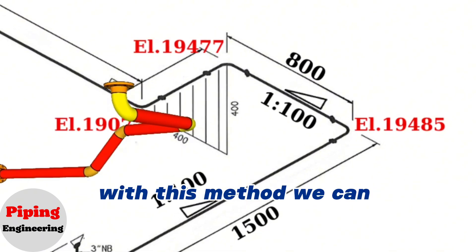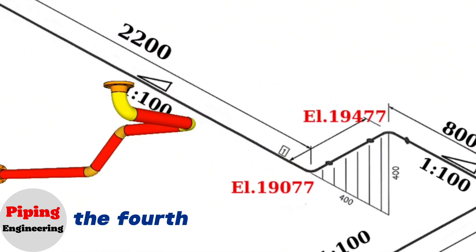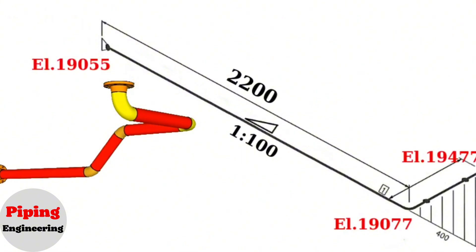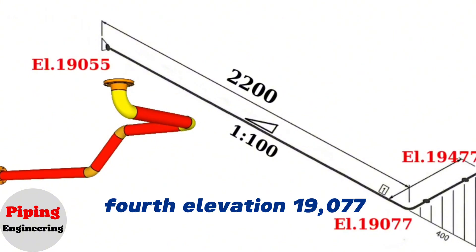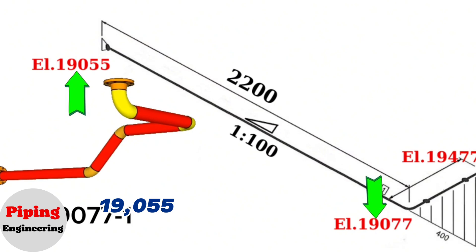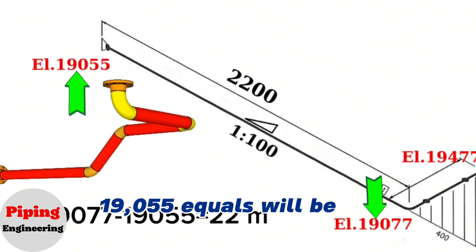With this method we can calculate the difference of the levels in the fourth and fifth rotations. Fourth elevation 19,077 mm minus fifth elevation 19,055 equals 22 mm.